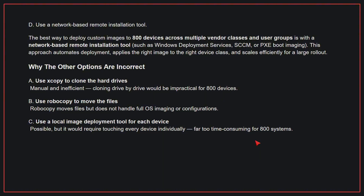Why the other options are incorrect: A, use xCopy to clone the hard drives — this is manual and inefficient; cloning drive-by-drive would be impractical for 800 devices. B, use Robocopy to move the files — Robocopy moves files but does not handle full OS imaging or configurations. C, use a local image deployment tool for each device — this is possible, but it would require touching every device individually, far too time-consuming for 800 systems. Therefore, the correct answer is D.